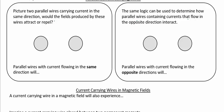Let's look at this first case where both wires are carrying current in the same direction — let's say they're both carrying current into the page. We can use our right-hand rule: point your thumb into the page and note that surrounding the first wire the field is going to be surrounding it in a clockwise fashion. Similarly, since the second wire is also carrying current into the page, it will also have its field going in a clockwise fashion.